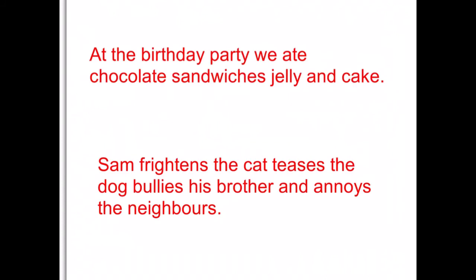Both of these sentences are missing their commas. Listen to how each sentence is read — it will give you a clue about where to place the comma. Sentence one: 'At the birthday party we ate chocolate, sandwiches, jelly, and ice cream.' Sentence two: 'Sam frightens the cat, teases the dog, bullies his brother, and annoys the neighbours.' Pause and try adding the commas, then come back to check.